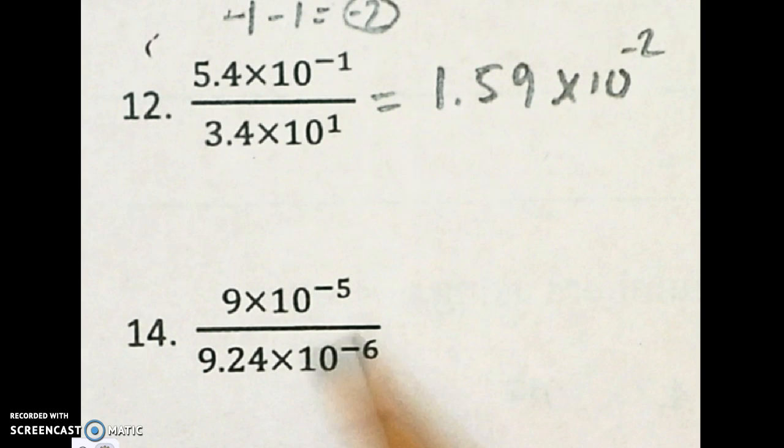Okay, if we're taking a look at this one, I'm going to divide the numbers and subtract the powers again. So here we go. Doing 9 divided by 9.24. Here's what I get.